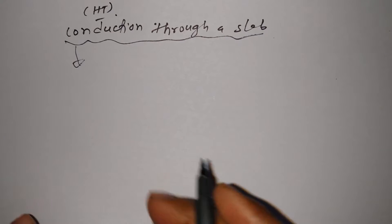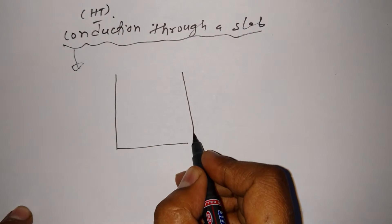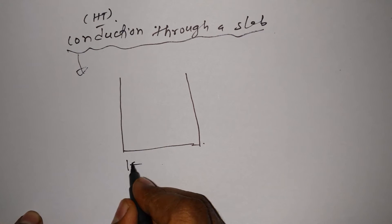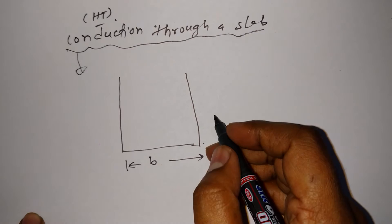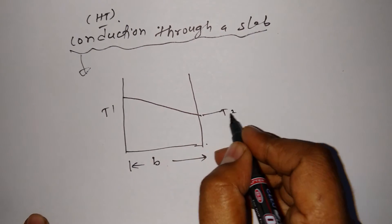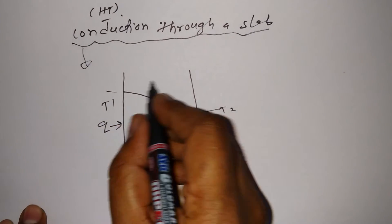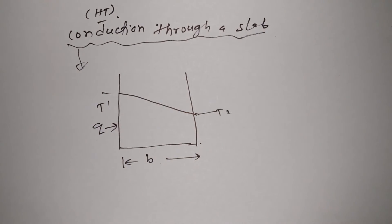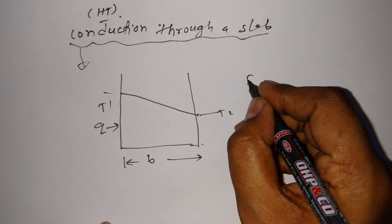Suppose we have a slab like this, and the thickness of the slab is B. The temperature on one side is T1 and on the other side is T2. Heat is transferring through this wall — we can also call it a slab. Now, how would you calculate the heat transfer for this?